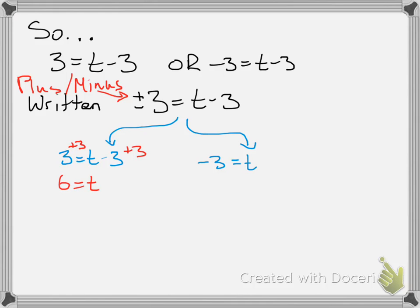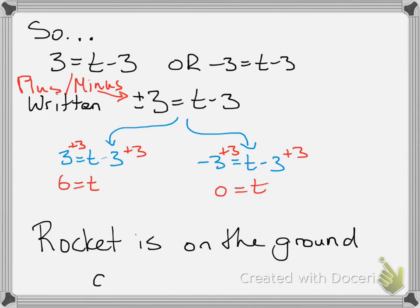On the other hand, we get negative 3 is t minus 3, and we need to add 3 to both sides to get rid of that minus 3. And we get 0 is equal to t. So there's our two answers, and we get that the rocket is on the ground at 0 and 6 seconds. All right, so let's look at one more example.